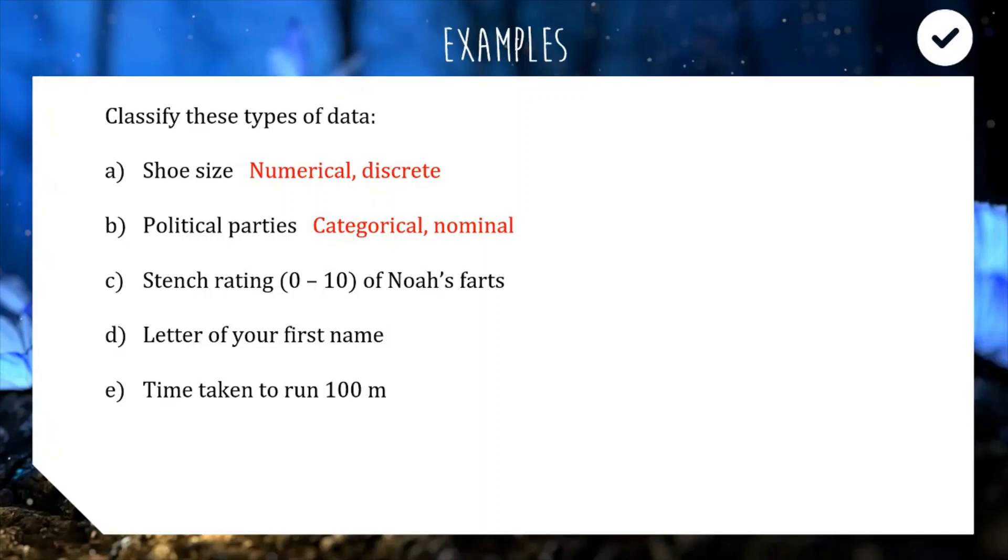The controversial one for C, we have the stench rating from 0 to 10 of Noah's farts. This is obviously numerical data but it's a bit tenuous because if we say we are only allowing whole numbers or 0.5s this would be discrete, unlike Noah's farts it'd be discrete data. But if you allow things like 7.781242 it now becomes continuous. We're going to keep it simple and say that we're only allowing whole numbers from 0 to 10 so there's only 11 possibilities which means it is discrete. If you allow decimal points as far as you can go it would now be continuous.